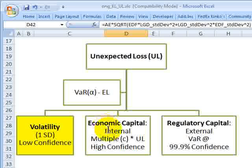So we move to multiples of one standard deviation, higher levels of confidence, and we have economic capital, which is the internal measure. And it's going to be some multiple, this constant C, of the unexpected loss as defined by one standard deviation. And we're going to be into higher confidence.